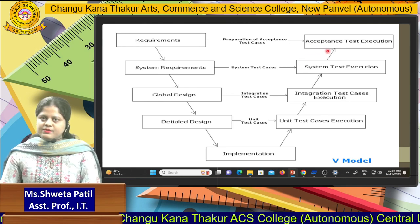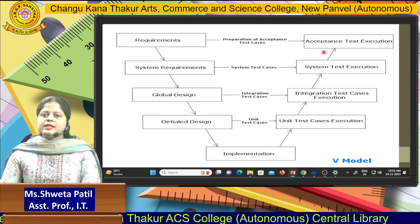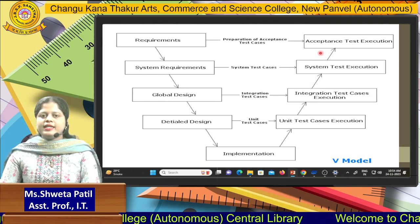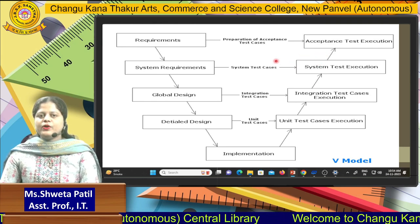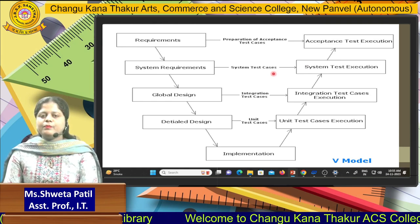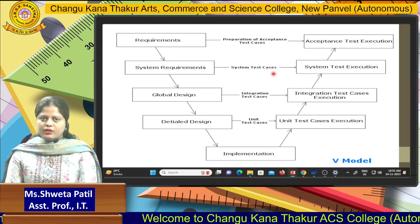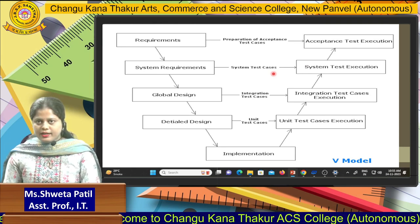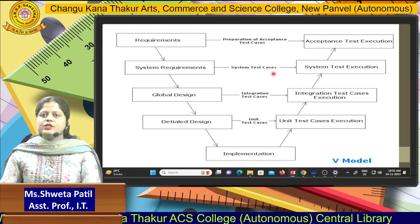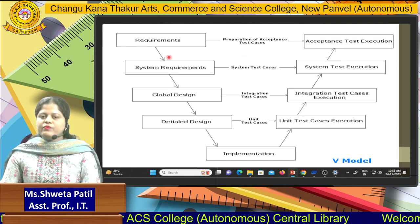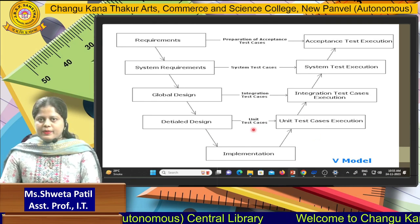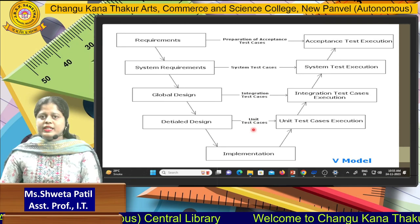The last phase is acceptance testing. Acceptance testing is user-level testing. Whenever you launch the product into the market, the customer checks whether the product is working fine or not. If the product is not working fine, it is given back to the producer. That is acceptance testing, and the V-Model is easy to implement.